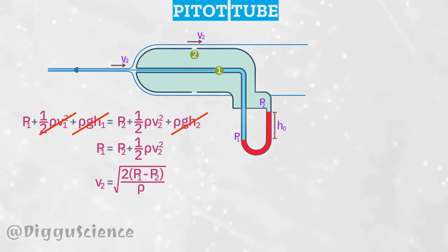Now pay attention to the manometer. p1 = p2 + ρ0gh0. ρ0 here is the density of mercury.